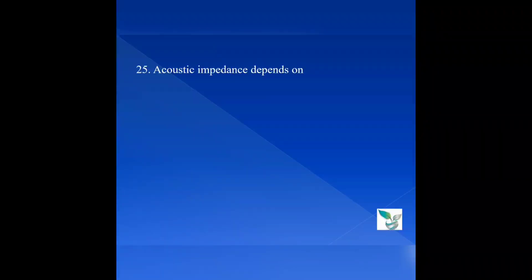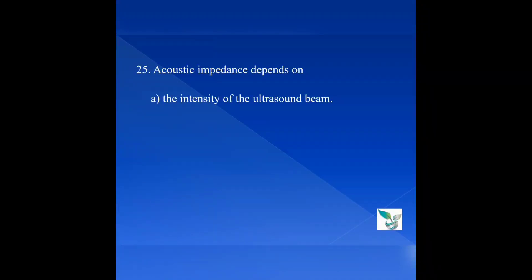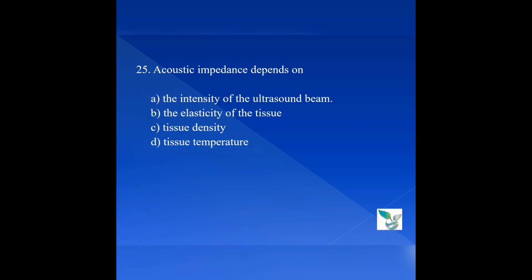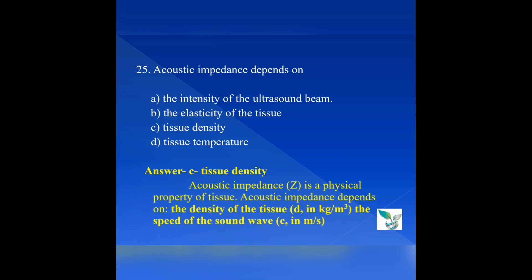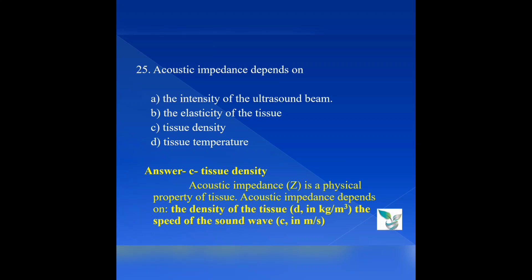Moving on to question number 25: Acoustic impedance depends on — option A, the intensity of the ultrasound wave; option B, the elasticity of the tissue; option C, tissue density; and option D, tissue temperature. The answer is option C — tissue density. Acoustic impedance is a physical property of tissue. It depends on the density of the tissue and the speed of the sound wave — density in kilograms and speed of sound in meters per second.